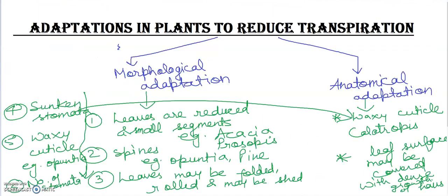So these are some points related to the adaptations which plants are going to adapt just to reduce the rate of transpiration. This is all about today's lecture. In this video I have told you only how plants are going to reduce their transpiration rate. They want to reduce transpiration rate sometimes due to lack of water, sometimes in drought conditions. So many types of stress plants have to face.